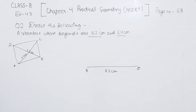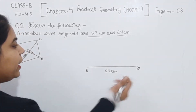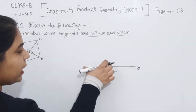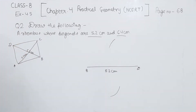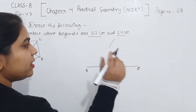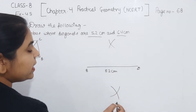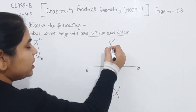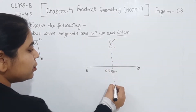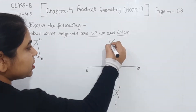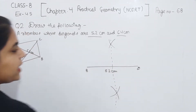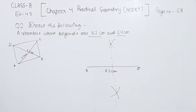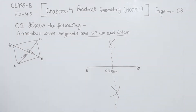Now we are going to draw the perpendicular bisector on line segment BD. Taking B as center with more than half the compass, we draw one arc on the upper side and one on the lower side. Now taking D as center with the same measurement, we draw one arc on the upper side. Now we join both intersecting points. This line is dividing BD into two equal parts.